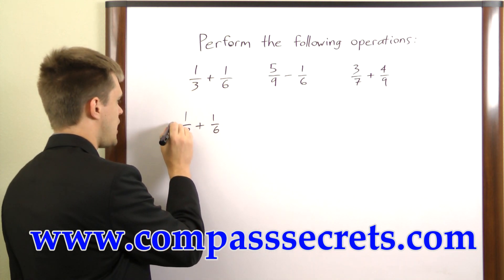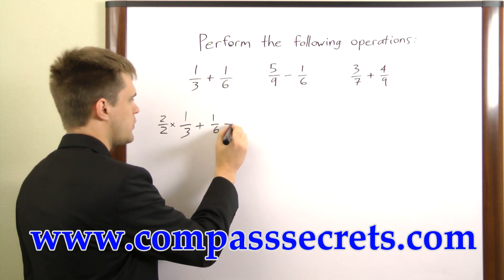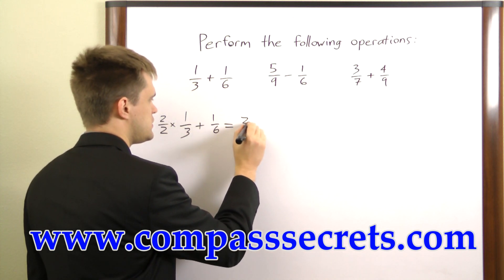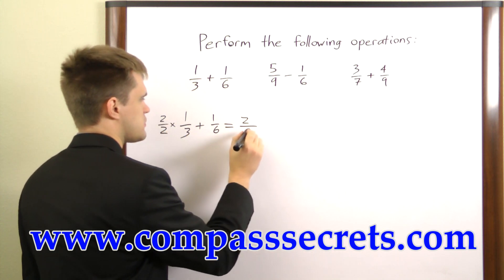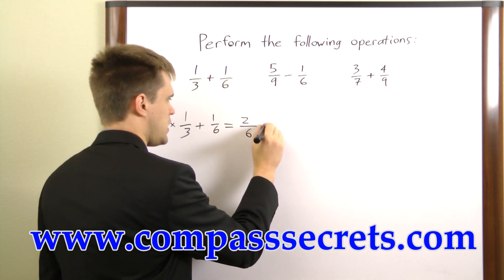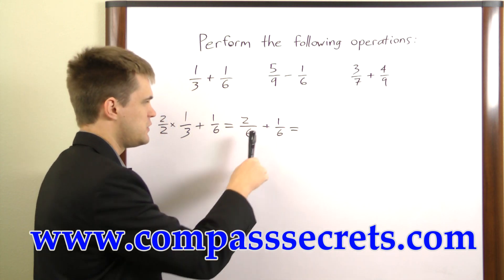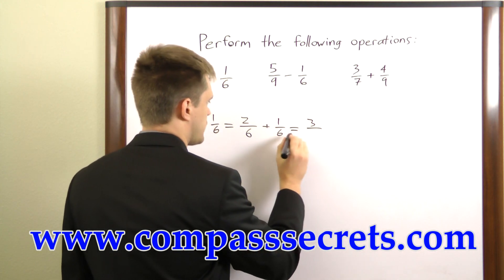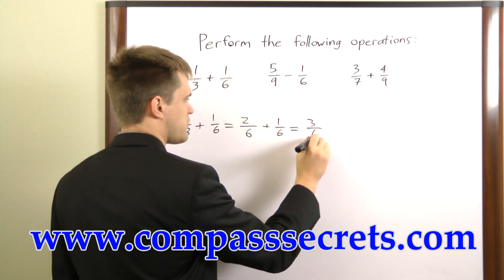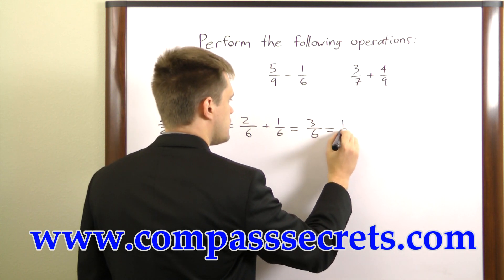We'll multiply the top and bottom by 2, and what we get is 2 times 1 is 2, over 2 times 3 is 6, plus 1 over 6. And then all we have to do is add these. 2 plus 1 is 3, and we retain the 6 on the bottom, so we have 3 over 6, or 1 over 2.